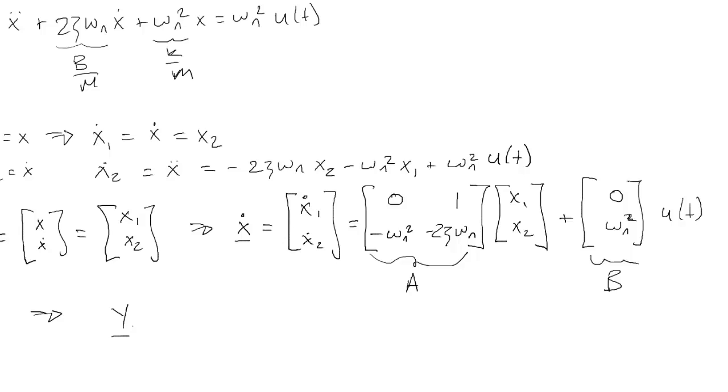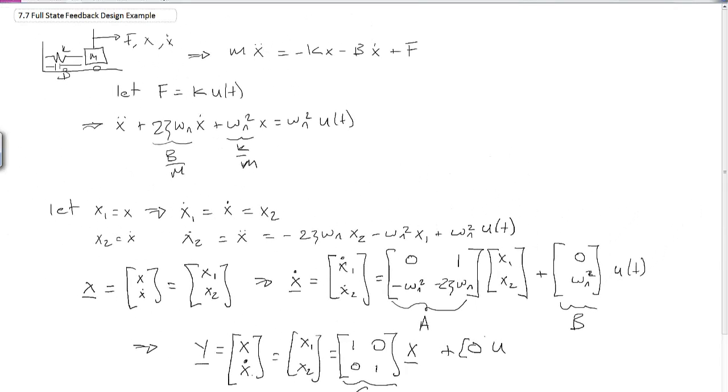Finally, we have that y is just equal to x. We're going to measure all the states, so we're going to measure x and x dot, which is x1 and x2. We're measuring these independently in two separate measurements. That's equal to the identity matrix times the state vector plus 0 times the input. So our output matrix C is the identity, and the feed-through matrix D is equal to 0. We have our system in state-space form.